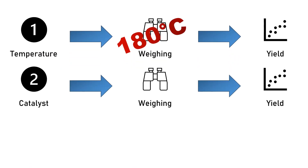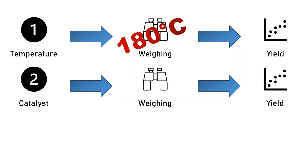What you then do is you take different catalysts, try different catalysts for your chemical reaction, and see how they might influence the yield. You test the different catalysts and let's say you find a better catalyst than your previous one — let's call that catalyst 2. It increases the yield even more.